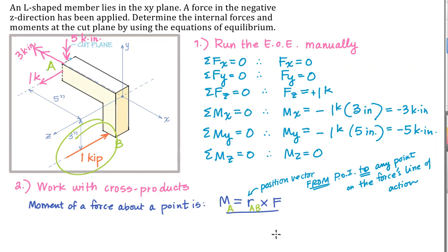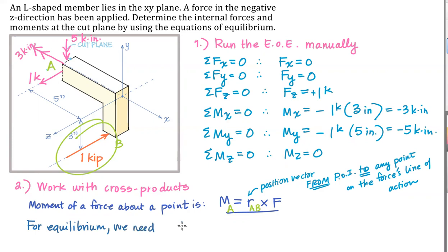What we need is the equal and opposite moment vector for equilibrium — I'll call this the reacting moment M sub R, which is equal and opposite to M sub A, so I can write that as negative M sub A. To make the cross product give the reacting moment, I just change the order of the two terms: instead of R cross F, we switch it to F cross R. We're still going to use R from A to B and F for the force.